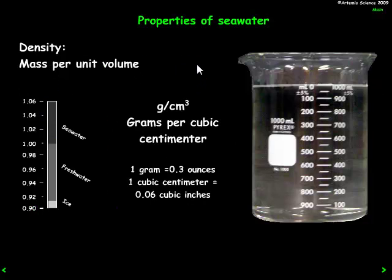Density of water is the mass per unit volume — the higher the density, the heavier the water — and we measure it in grams per cubic centimeter. Ice floats on water, so it has a lower density. Fresh water is in the middle. Seawater, with all its dissolved salts, has a higher density. So where fresh water flows into seawater, the seawater sits at the bottom and the fresh water stays on top.